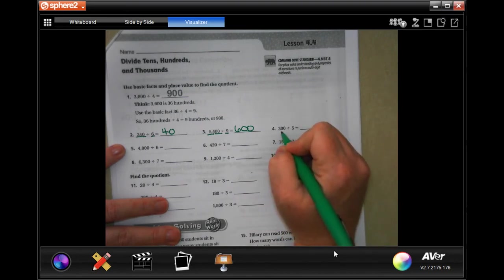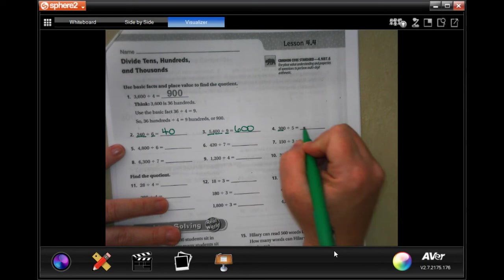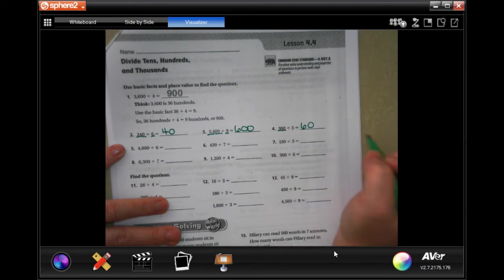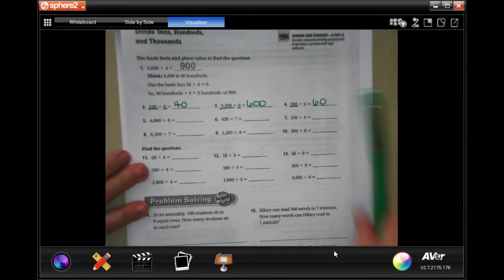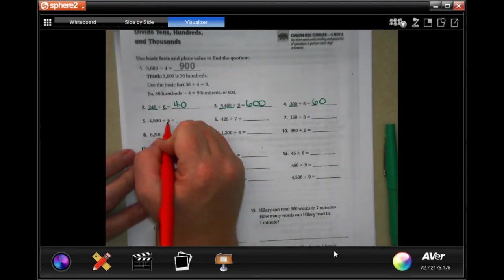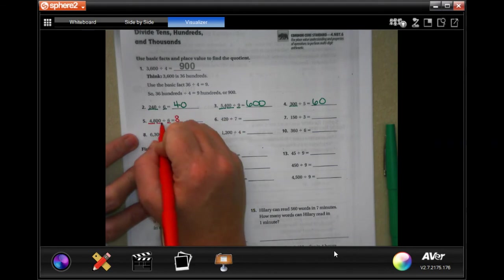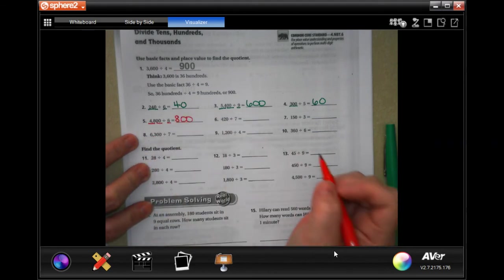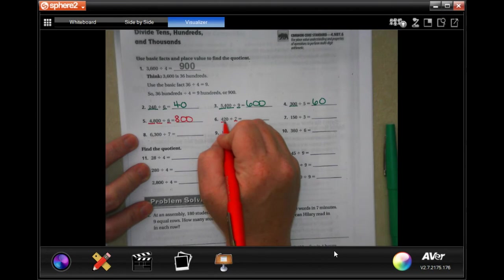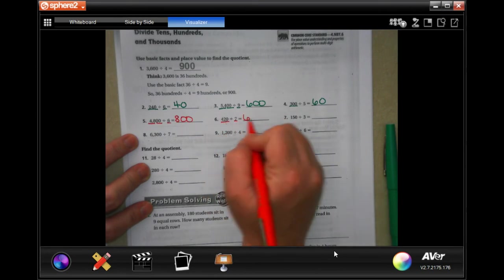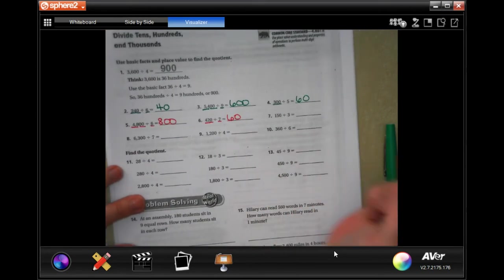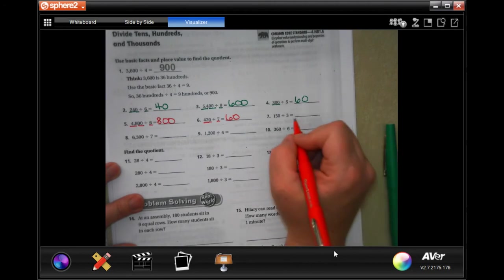Now five doesn't go into three, but five does go into thirty six times and then you have one more zero, boom. Six goes into 48 eight times, two zeros done. Seven goes into forty two six times, add a zero.